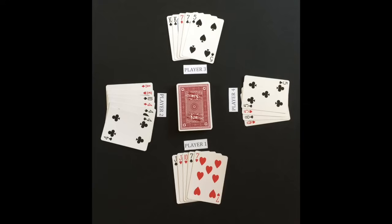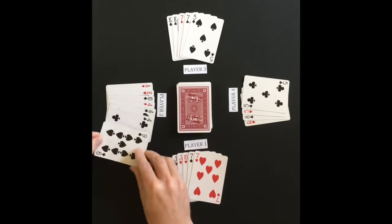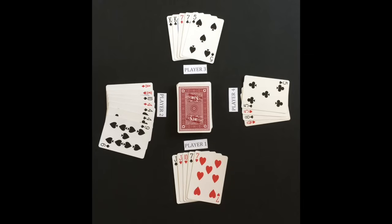Player two now asks player three if he has any fours. Player three does not have any fours and responds, go fish. Go fish means player two will draw a card from the center deck. Play now moves to player three.